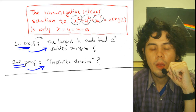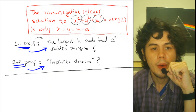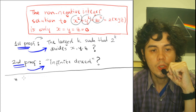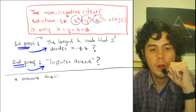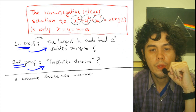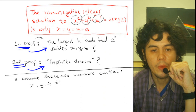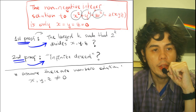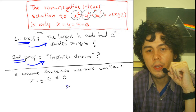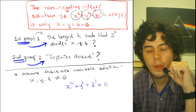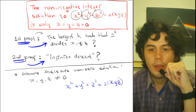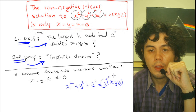I will start by first assuming there is a non-zero solution — that is, x, y, and z are all not equal to 0. Since x, y, and z must satisfy this equation, notice that the right-hand side, 2 times x times y times z, is an even number. So the left-hand side must also be even.